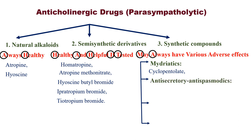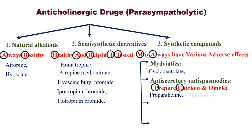A stands for Anti-secretory and Anti-spasmodic. Remember: if you go to your relative's 'Anti' house, they will prepare chicken and omelet for you. So in anti-secretory and anti-spasmodic: P for Propantholine, C for Clidinium, and O for Oxyphenonium.